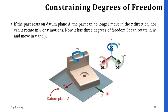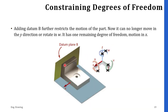The part can still move in the X direction, the Y direction, or rotate in the W direction. If we add another datum, that is B, we can further restrict the motion of the part. After adding datum B, the part no longer moves in the Y direction or rotates in the W direction. So it now has one remaining degree of freedom — motion in the X direction. After adding datum plane B, the part can still move in the X direction while all other movements and rotations are restricted.